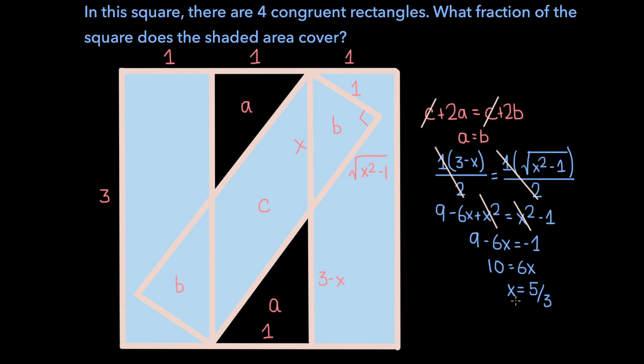And so if x is 5 over 3, then this side's length is 3 minus 5 over 3, which is 9 over 3 minus 5 over 3, which is 4 thirds.